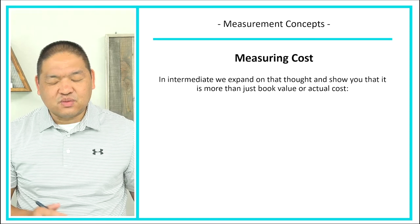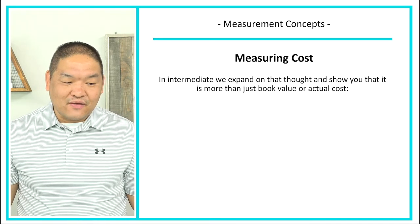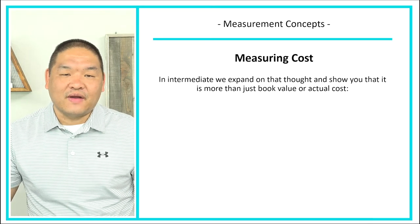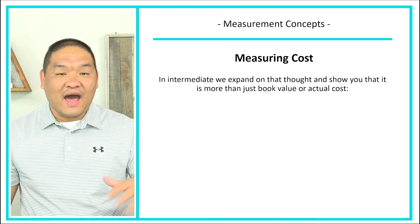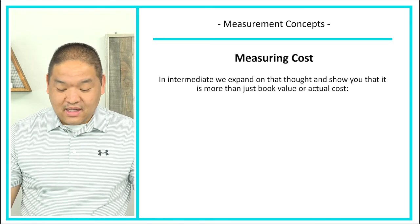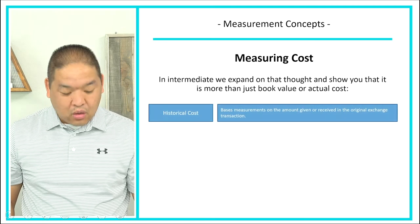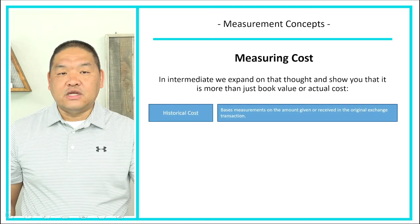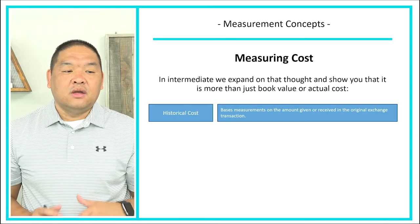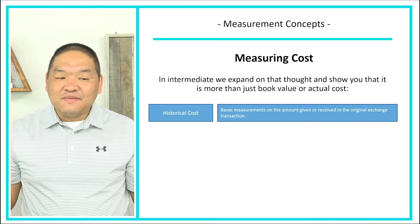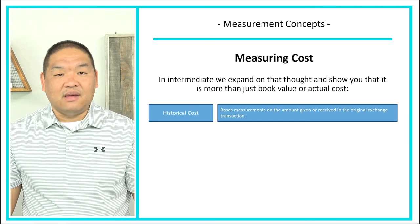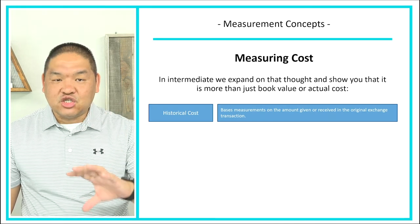In intermediate accounting we expand on that and show you it's more than just book value. Things we put on our financial statements might not always be at book value, although that is going to be the biggest one. The first measurement basis is historical cost — the cost incurred based on the amount given or received in the original exchange transaction. I would say 80-90% of the financial statement is based on historical cost, though some elements require a different measurement approach based on what GAAP tells us.